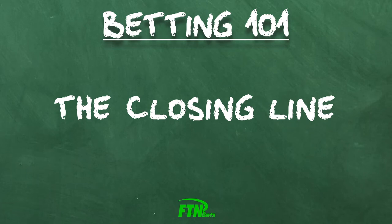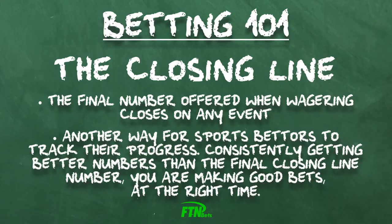The closing line refers to the number offered when wagering closes on any event. Numbers can move throughout the week, and one way many sports bettors track their progress is against what the line closes at. If you consistently get better numbers during the week than the final closing line number, you're making good bets at the right time.